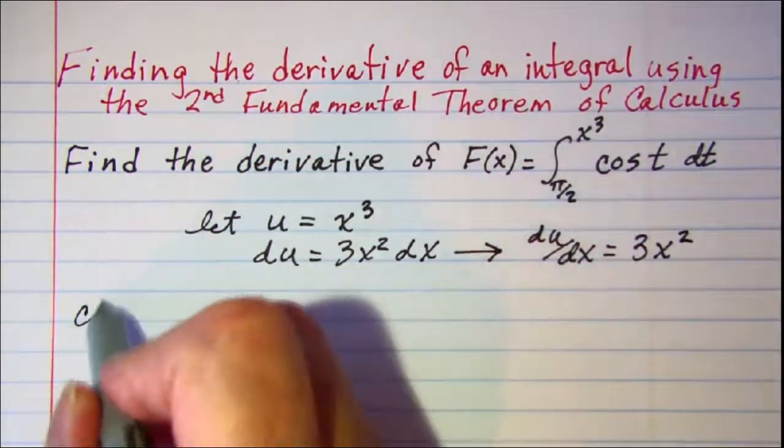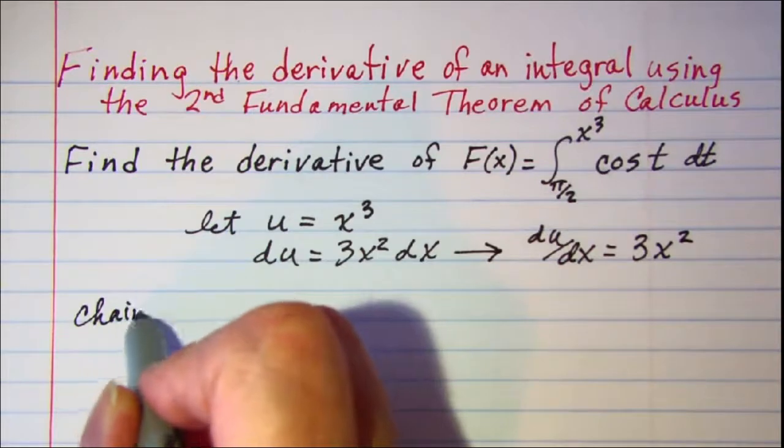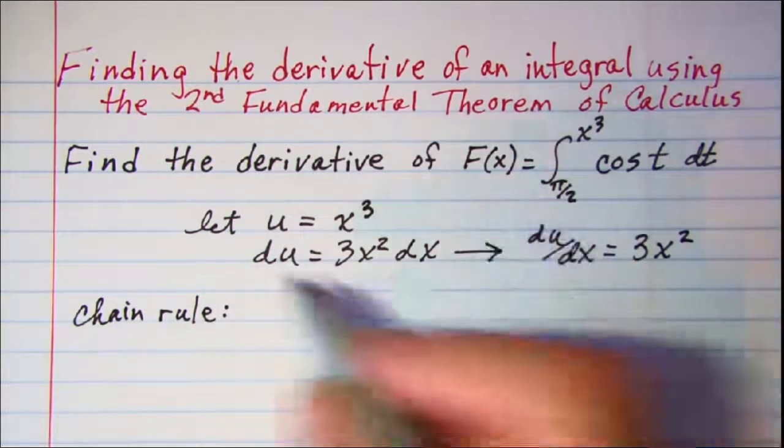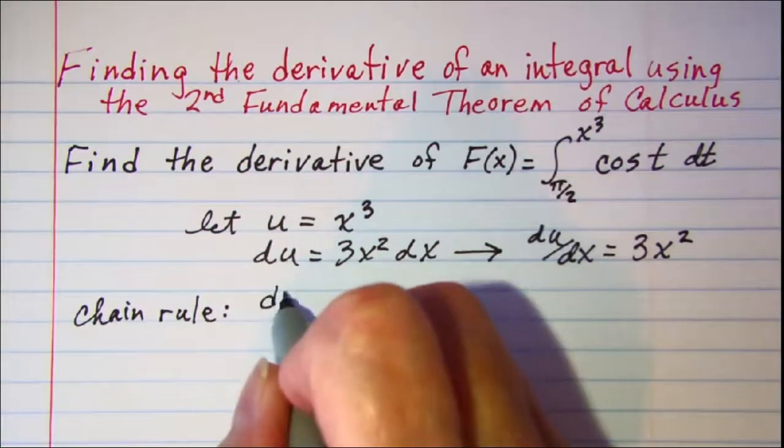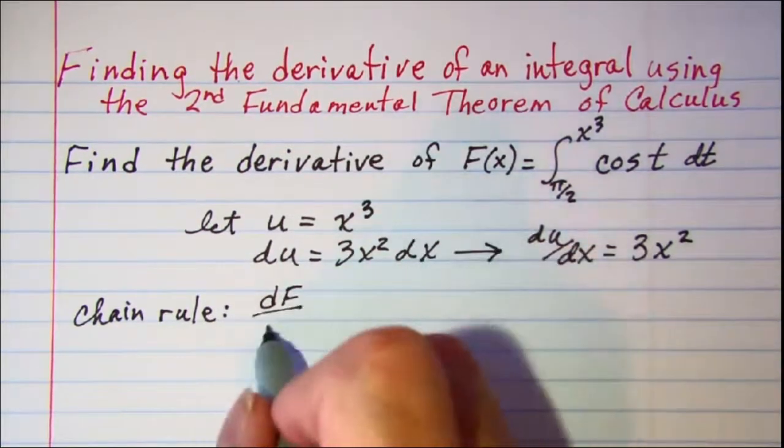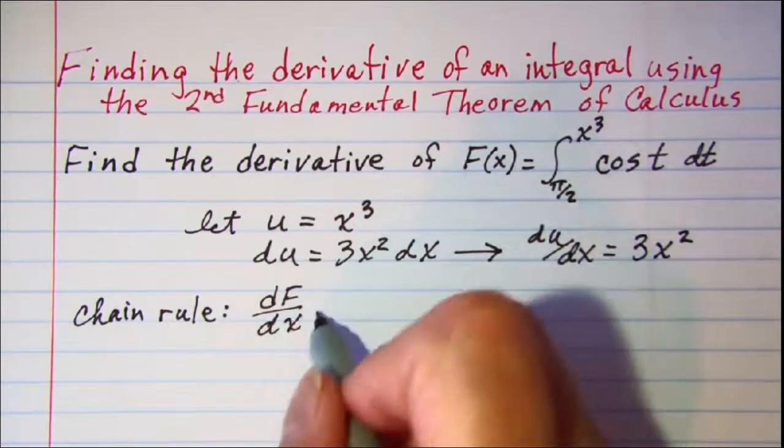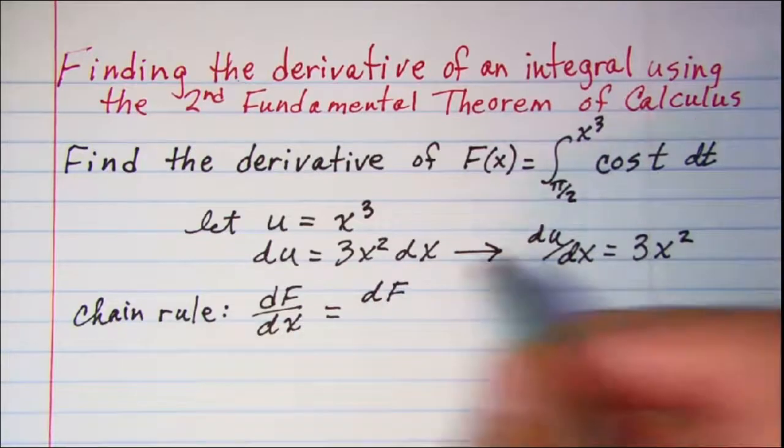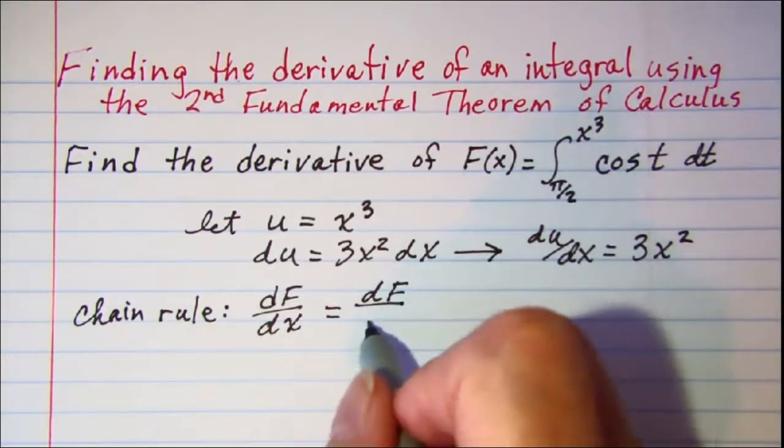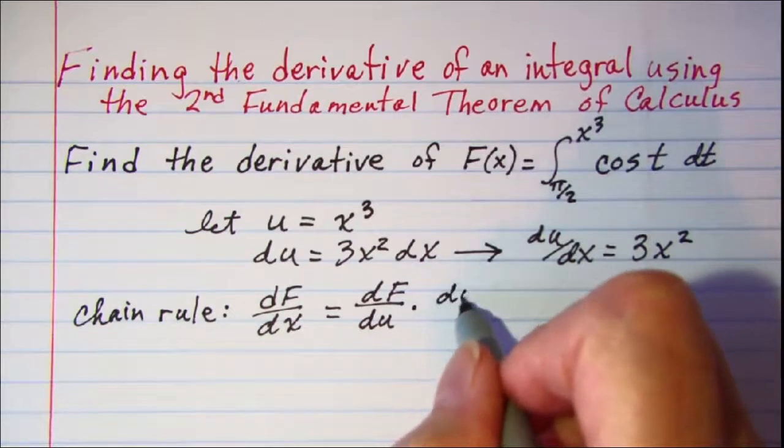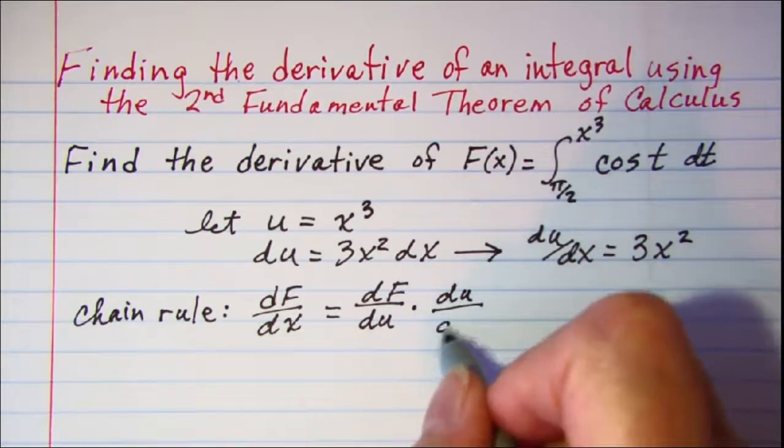Now our chain rule tells us that the derivative of f with respect to x is equal to the derivative of f with respect to u times the derivative of u with respect to x.